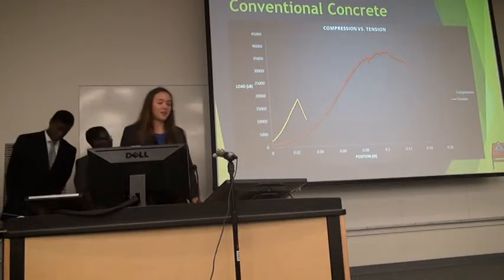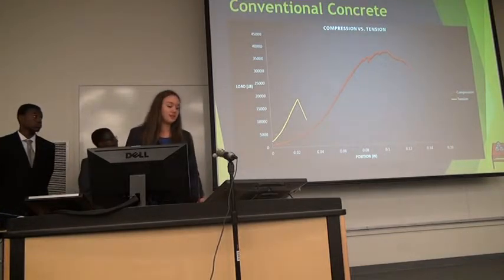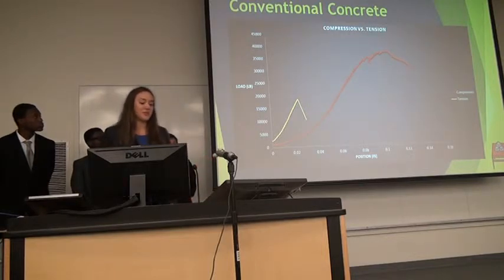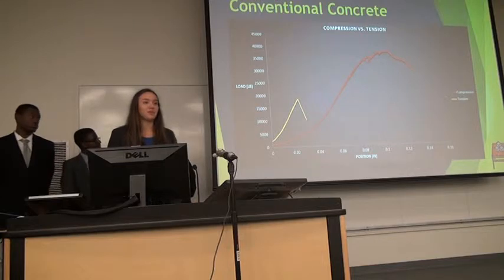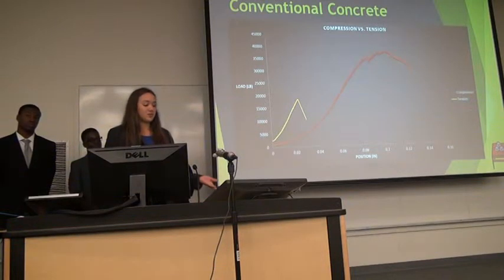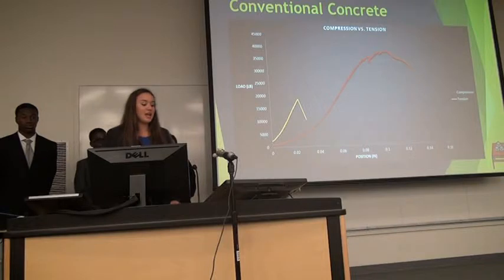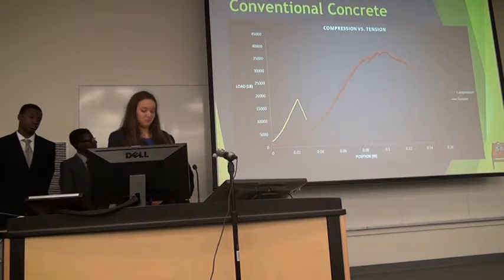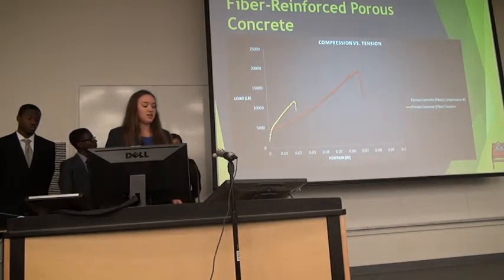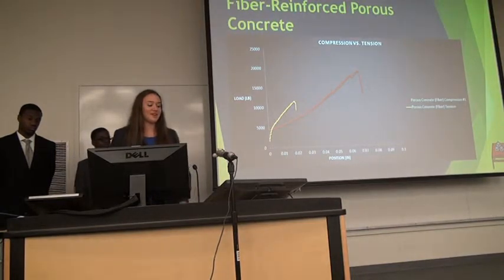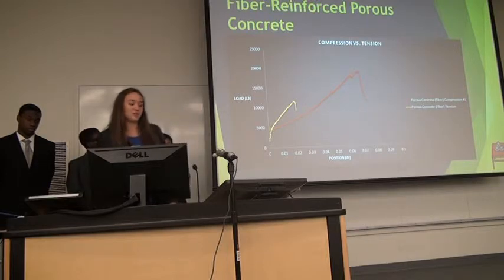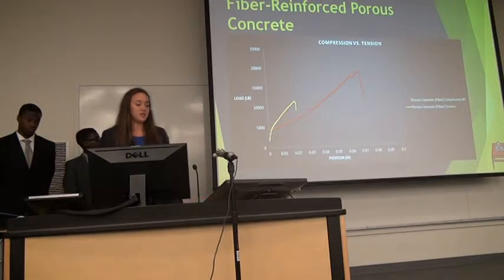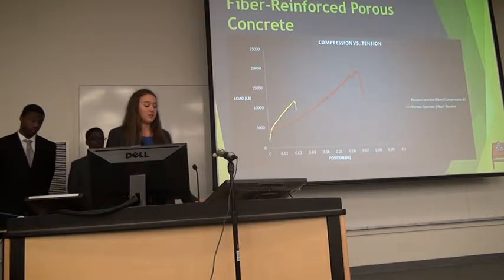Here is a graph comparing the compression and tension of conventional concrete. The compression load was about 40,000 pounds, but the tension load was around 20,000 — significantly lower. In reality, compression load is usually 10 times as much as tension load. This is also the same situation for fiber reinforced porous concrete: compression load is much higher than tension load, which is what we expected from the beginning.